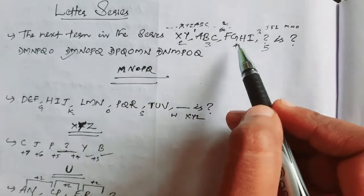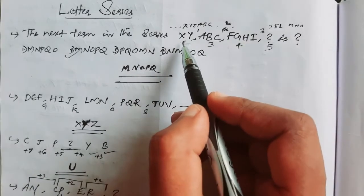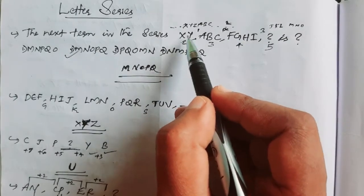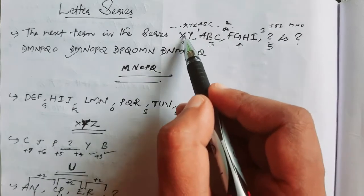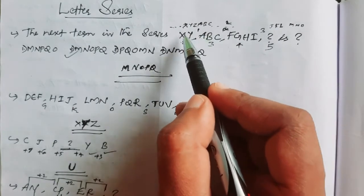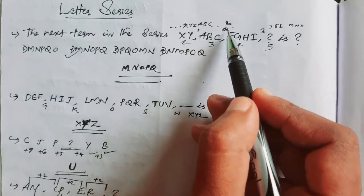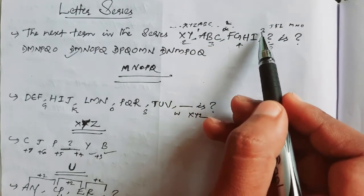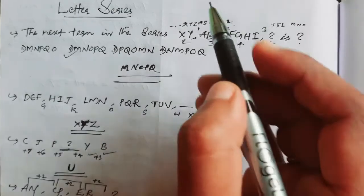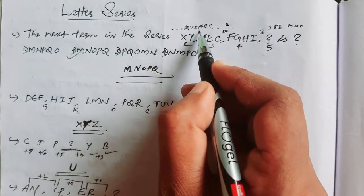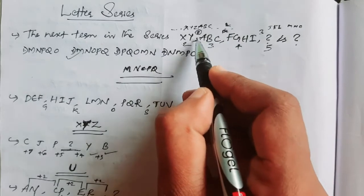Now this term is — FGHI, J, K, L — and then I'm going to solve the difference. If we solve one letter gap: after XY there is Z, or XY — it's not the first term. That means A, B, C, then D, E are missing.